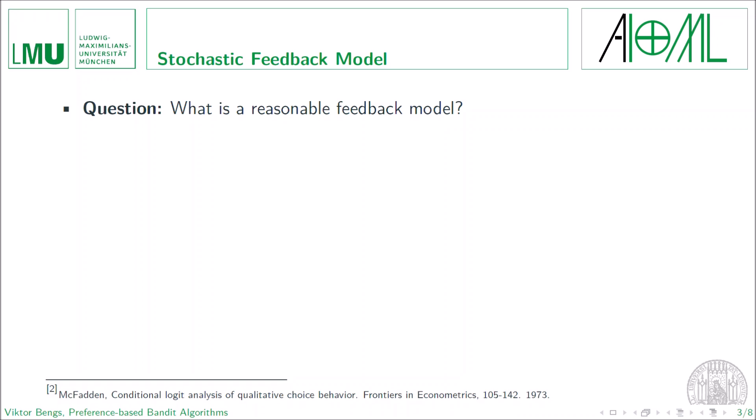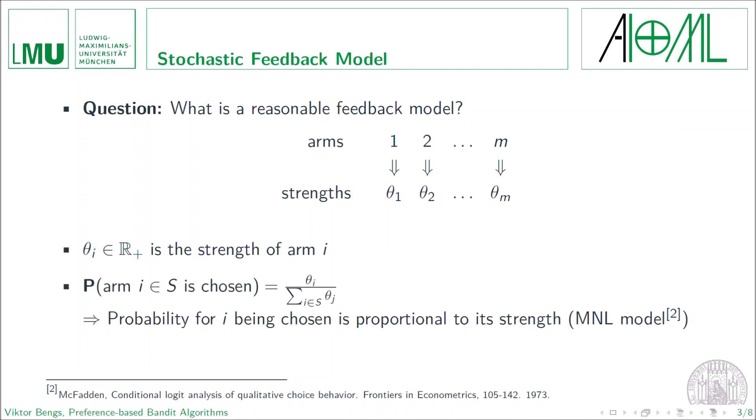Next, let us specify a reasonable probabilistic model for the feedback mechanism. We have our M-many arms representing the choice options and we assume that each of them is associated with a strength parameter theta, each of them living in the positive real numbers. And with this, we further assume that the probability that a specific arm i is the winner of a preselection is proportional to its strength parameter theta. And this is nothing else than the very popular MNL model, which is a popular choice model, especially in the fields of economics.